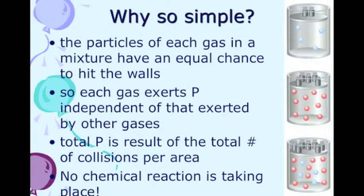Here's a visual. We have a blue gas under two little weights of pressure, and a red gas under five little weights of pressure. When you put the two of them together, the gases do not interact with each other other than to bounce off each other and keep going, but their pressures add up — which is why we have seven little weights on the combined container.